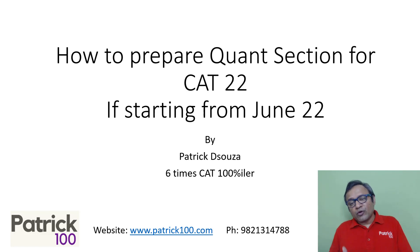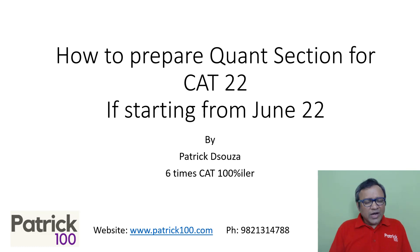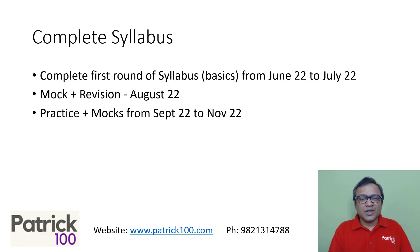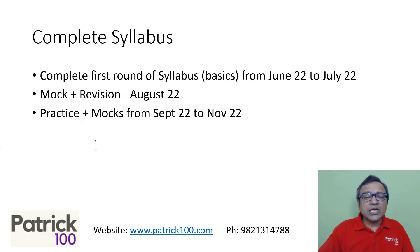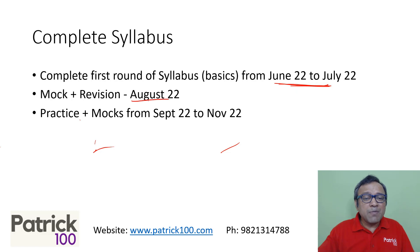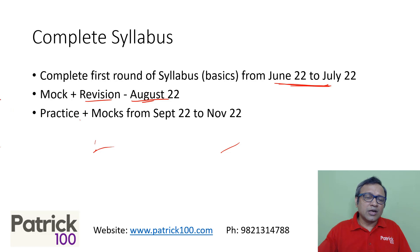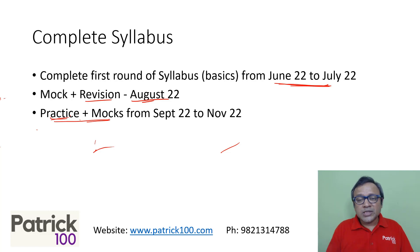If you're starting from June 2022 for CAT 2022, CAT is normally at the end of November, so you have enough time to prepare and do well. This should give you broad guidelines as to how to go about preparing. Generally, you need to try to complete your syllabus in two months — June and July. Then maybe one month for revision, where for any topic you're not comfortable with, you can revise and write mocks at intervals. Last, from September to November, focus on writing more mocks and practice — write mocks, identify your weak areas, and then practice those areas.